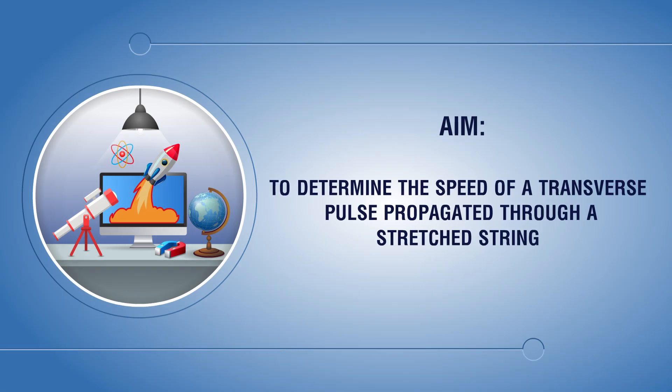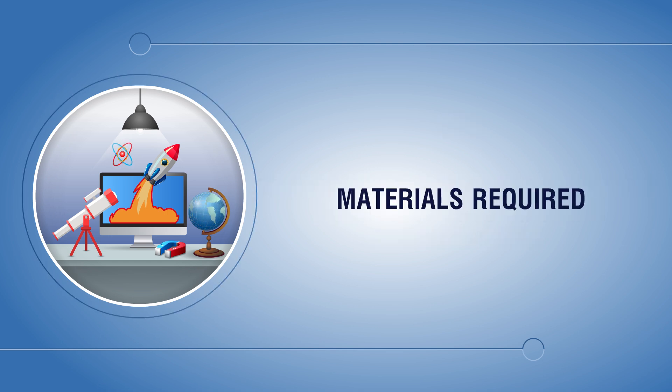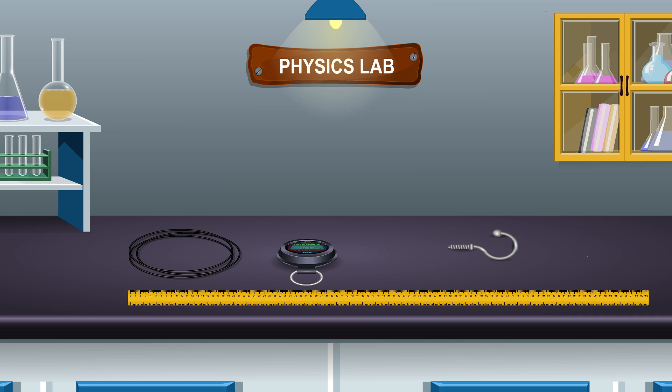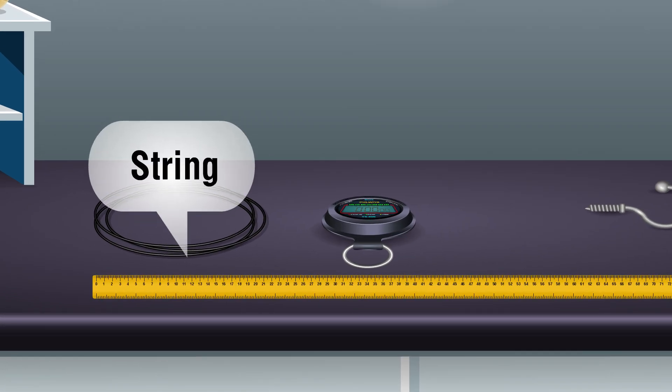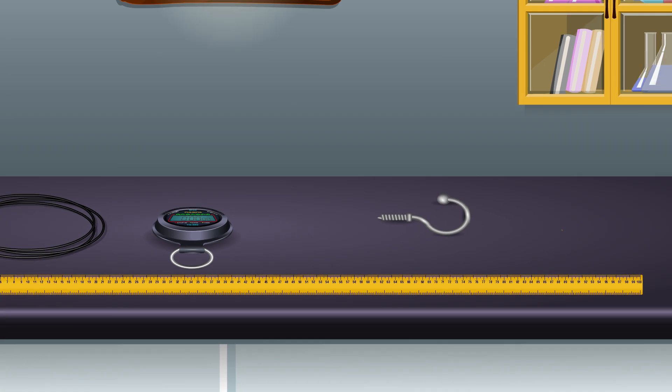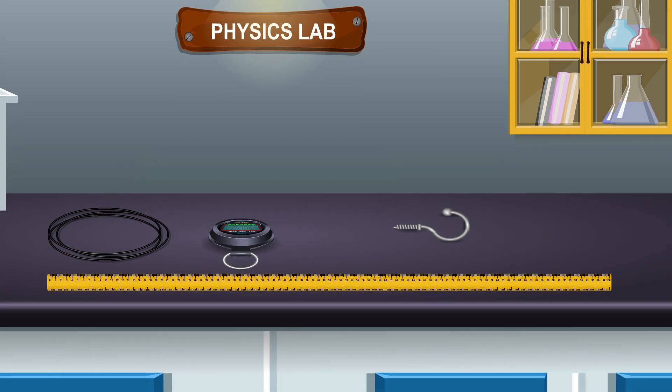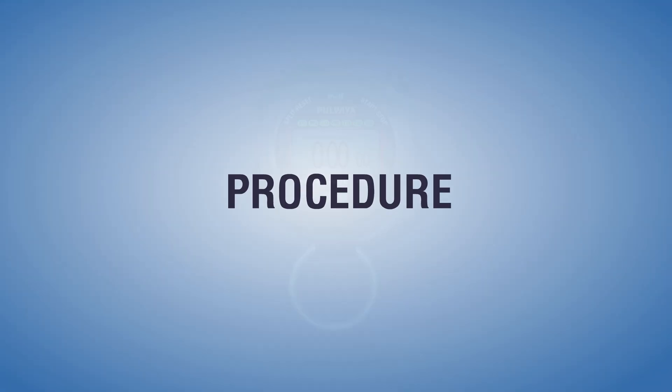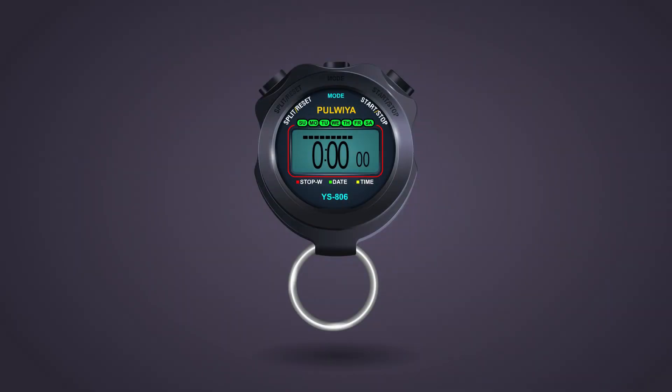Aim: to determine the speed of a transverse pulse propagated through a stretched string. Materials required: string, stopwatch, hook or door handle, meter scale. Procedure: find least count of stopwatch.